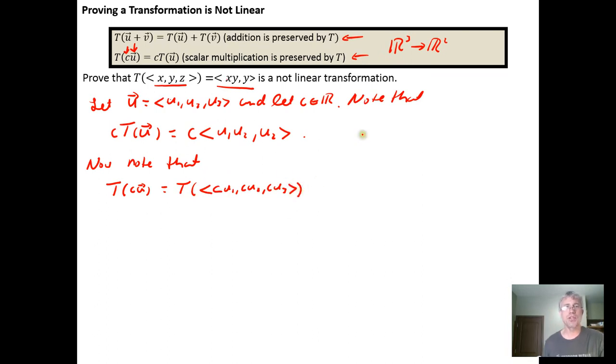And then what would this look like? Well, this would look like, we'll transform this vector. Now we take the product of the X and the Y components. So we get C U one times C U sub two, the product of the X and Y components and the Y component. So C U sub two.